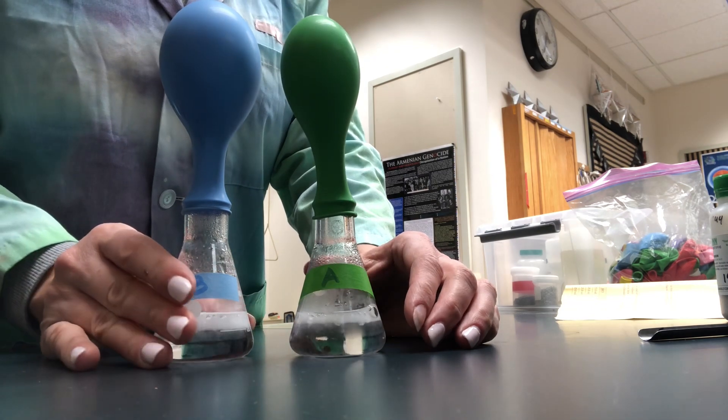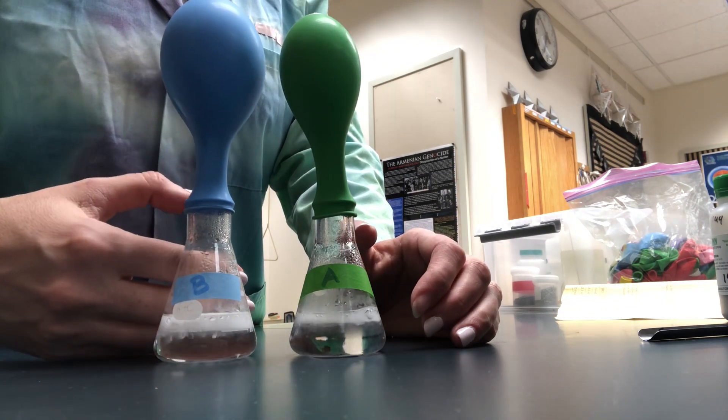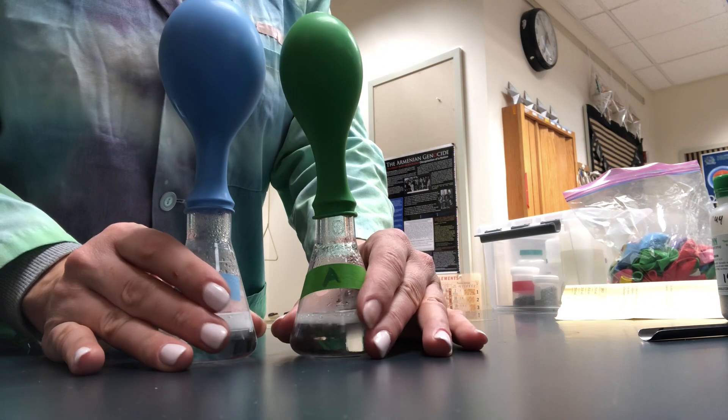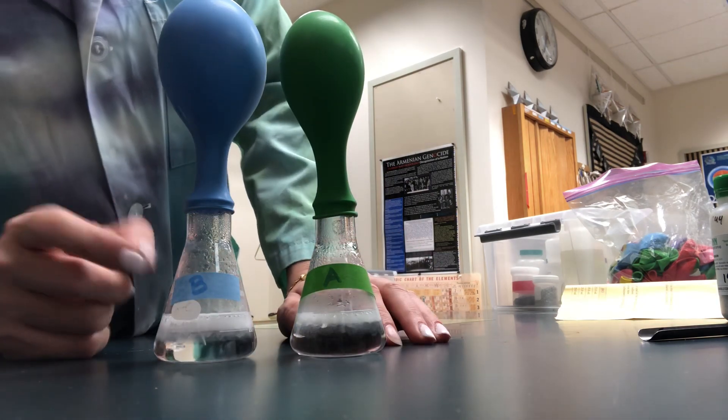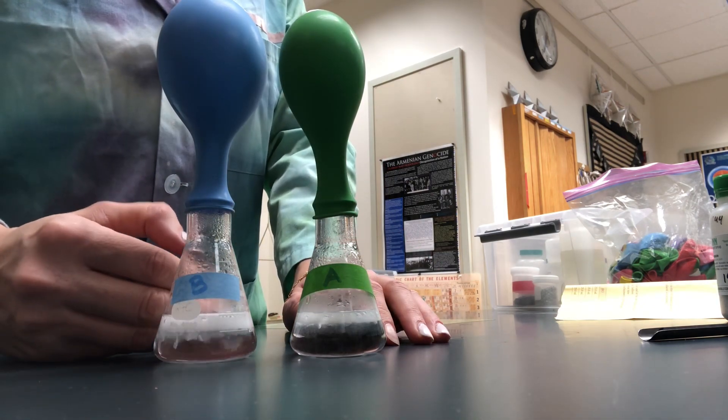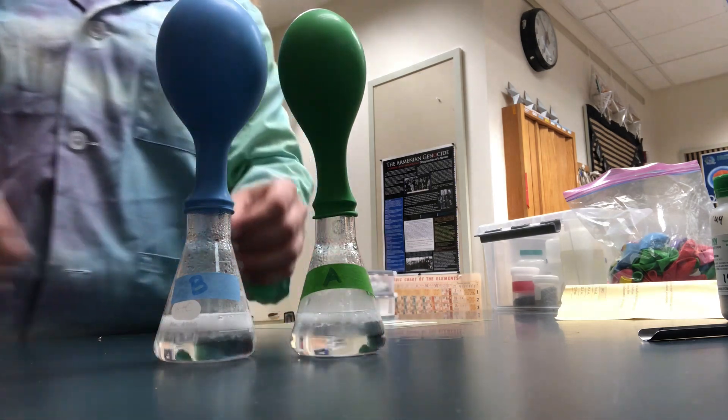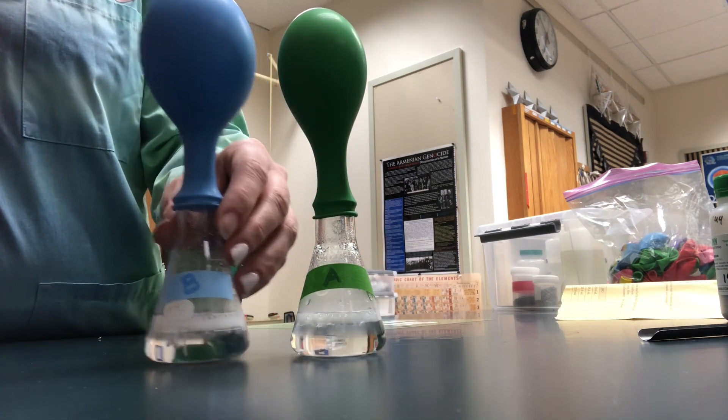Also, when I touch the flask with the back of my hand, they're both very hot. B is slightly hotter. Give you a slightly closer look.